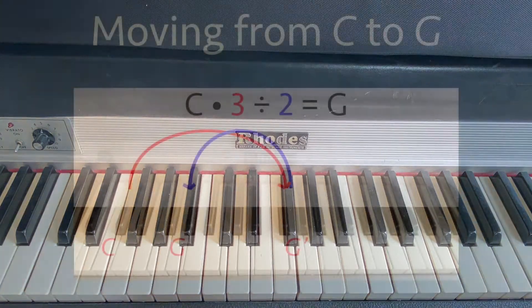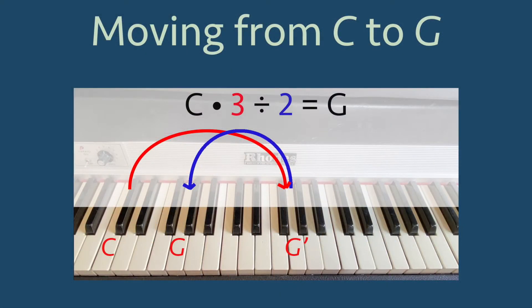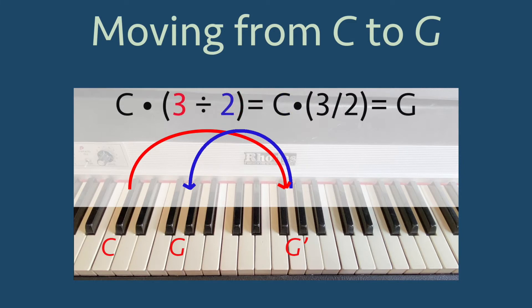We could write this mathematically as C times three divided by two equals G. It just so happens when multiplication is followed by division, we can group the division together into parentheses. So we can rewrite this as C times (three divided by two), which we can then write as C times the fraction three over two, which gives us G.